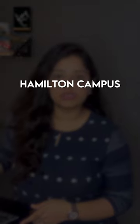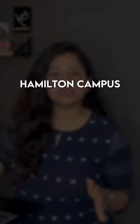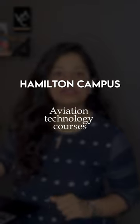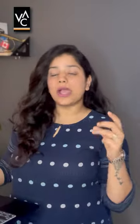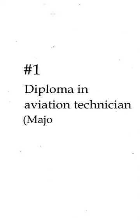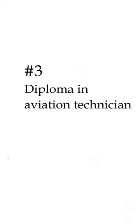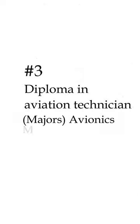The first campus is Hamilton Campus. This campus is a center for aviation technology courses at Hamilton International Airport. There are three courses available. The first course is a Diploma in Aviation Technician with a major in Aviation Maintenance. The second is a Diploma in Aviation Technician with a major in Aviation Structures. The third course is again a Diploma in Aviation Technician with a major in Aviation Maintenance.